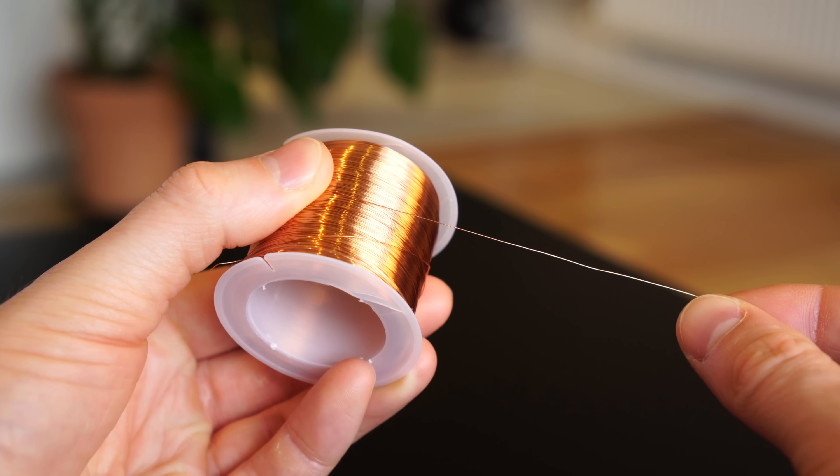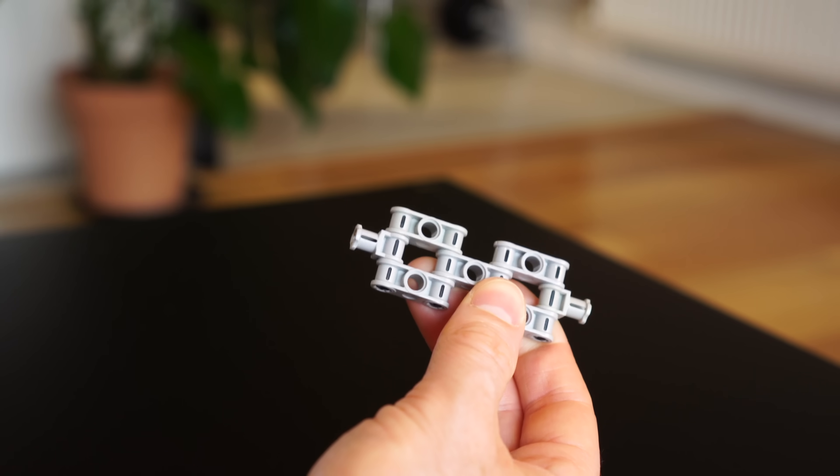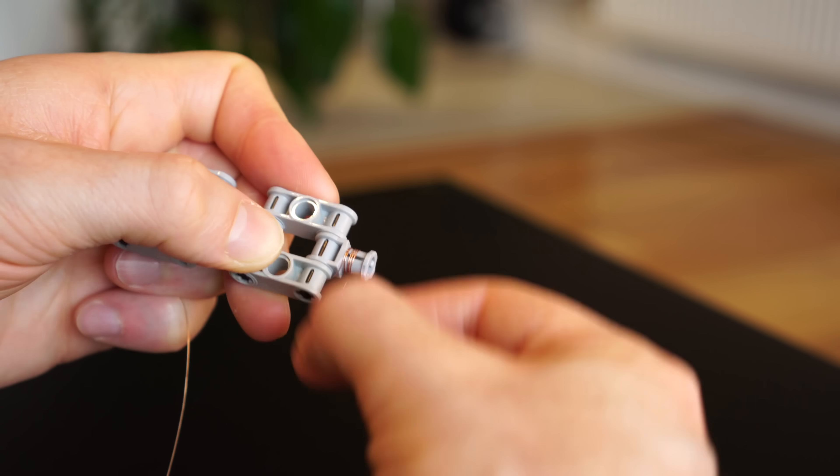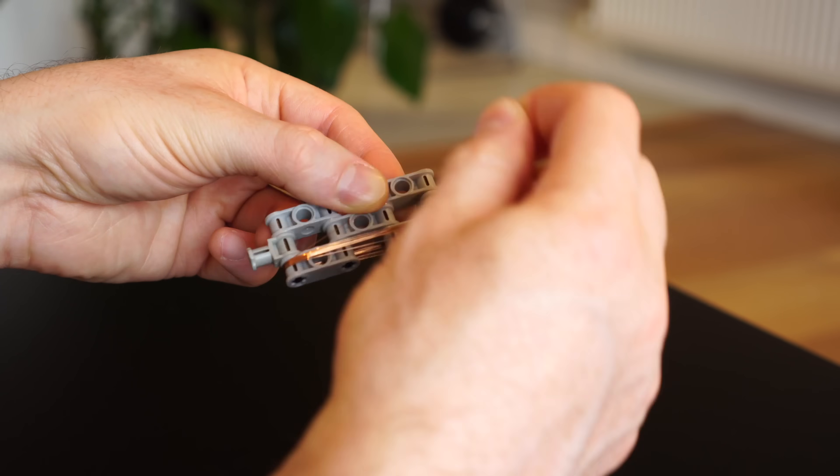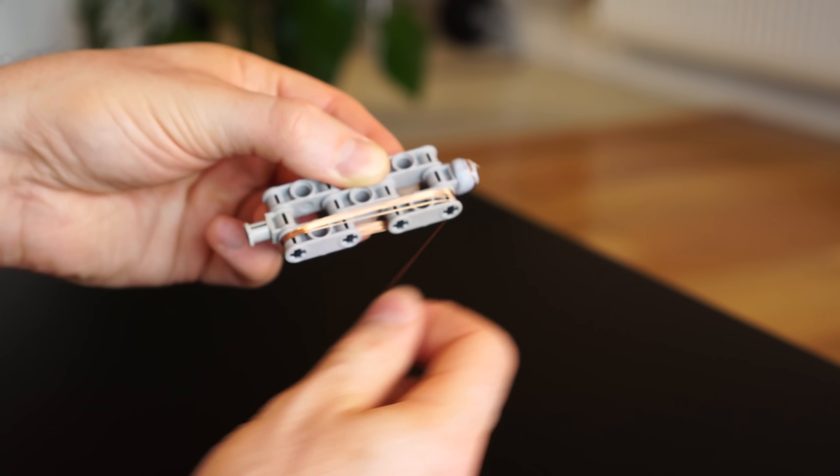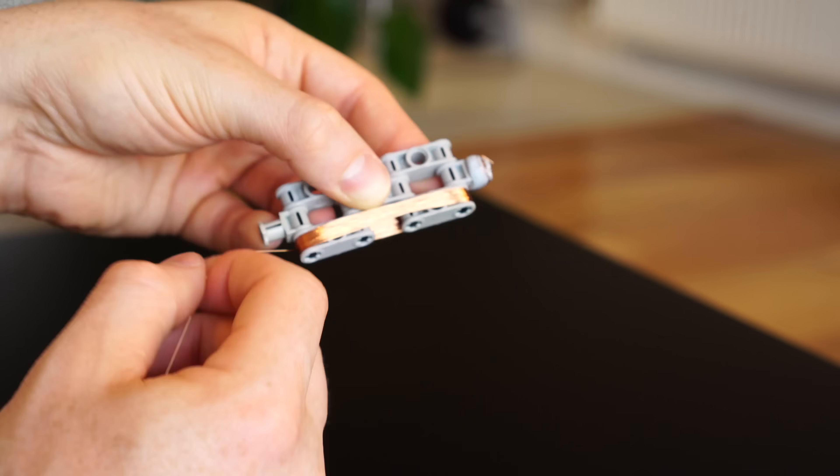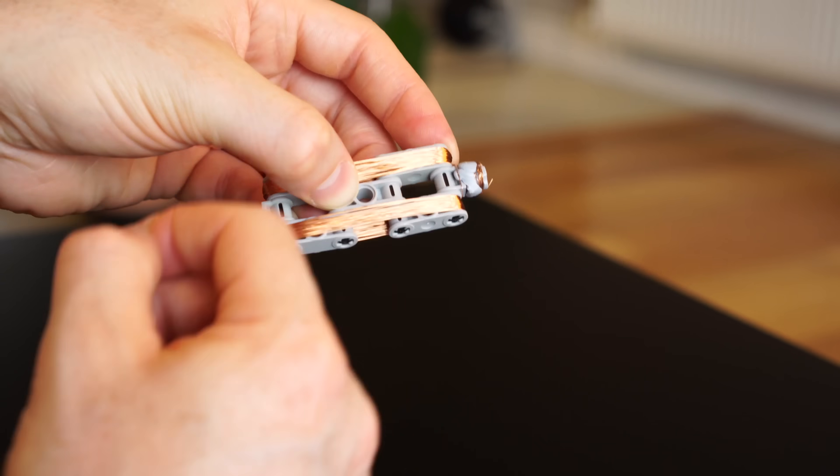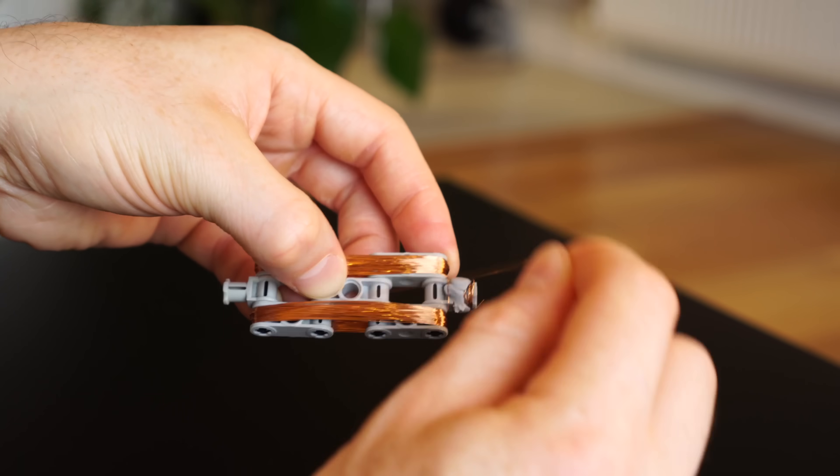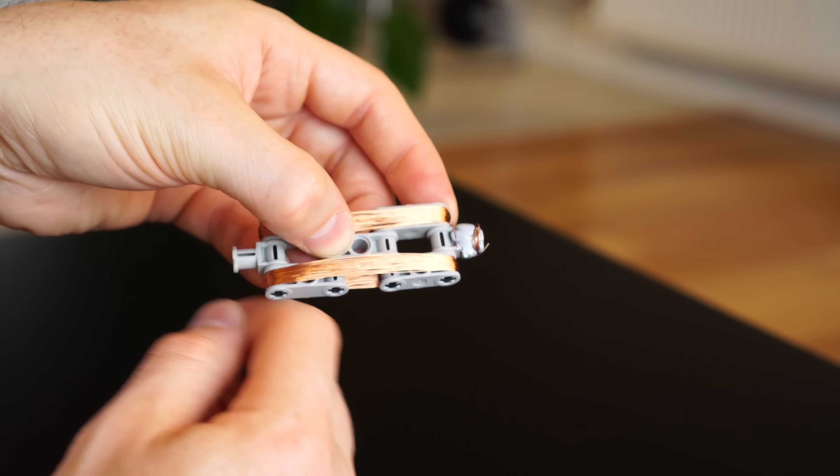Next then, we'll need our insulated copper wire, and I'm using a nice thin 32 gauge wire here, which we'll begin by securing with some blue tack. We can then wind the wire around one side of the armature, and after a hundred loops, we switch over to the other side, making sure to keep the winding going in the same direction. After another hundred loops on that side, our rotor windings are complete.